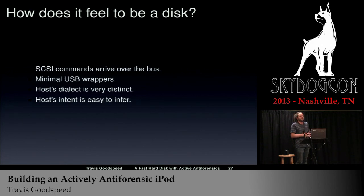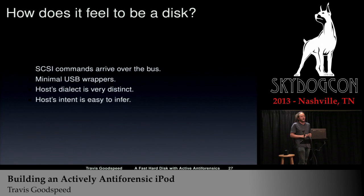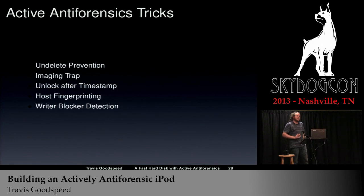The host dialect is very distinct. If you debug on Linux and connect it to a Windows machine or a Mac, you'll quite likely get an error or two because Windows and Macs use features that Linux does not use. For example, when you plug a disk into a Windows machine, it reads the master boot record nine times. This is because your block device is not cached on Windows, so when it's reading the partition table it does separate read commands to find how many partitions there are and then the beginning and end of each of the four partitions. The host's intent is very easy to infer — and you can do active anti-forensics tricks inside of the disk itself.